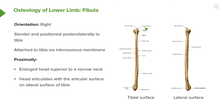Proximally we have an enlarged head and then a narrow neck. The head articulates with the articular surface on the lateral surface of the tibia. Here we can see an articular facet which allows the head of the fibula to articulate with the tibia.